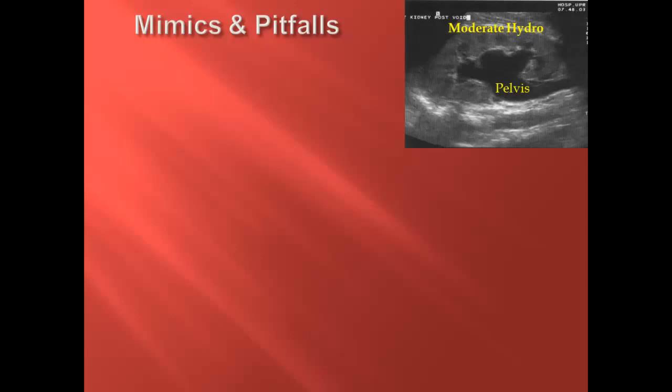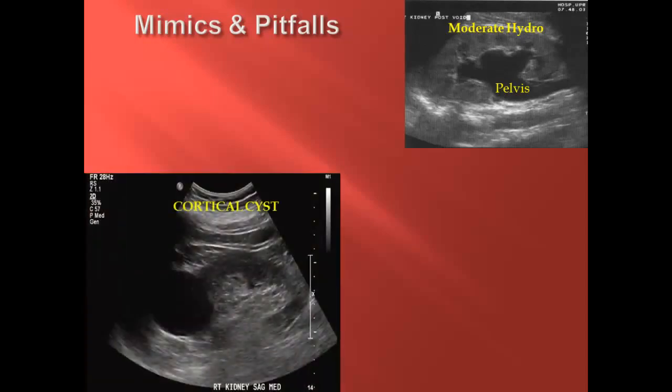Now let's quickly review some of the common mimics of hydronephrosis. Let's start with cortical cysts. They are dark, smooth-walled, and fluid-filled spherical structures, usually located in the cortex or the periphery of the kidney, far from the collecting system. They maintain their appearance in all planes of imaging and do not connect with the pelvis.